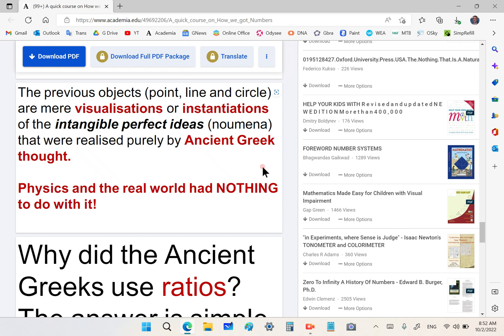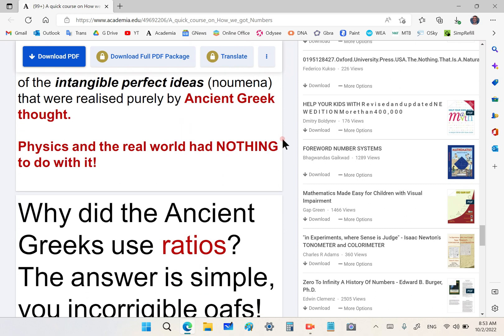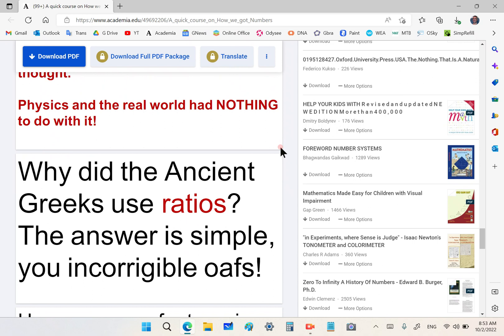They're just visualizations or objects that are used in communicating the ideas. Can you imagine taking the first proposition of Euclid without the diagram and explaining it? It turns out to be extremely difficult because it would be very verbose. The elements do not require diagrams. They are there to make the conveying of the ideas much clearer. The previous objects, point, line, and circle, are mere visualizations or instantiations of the intangible perfect ideas, which are called noumena, thanks to Immanuel Kant and, of course, going back to the originator, who is Plato, with his realm of perfect ideas.